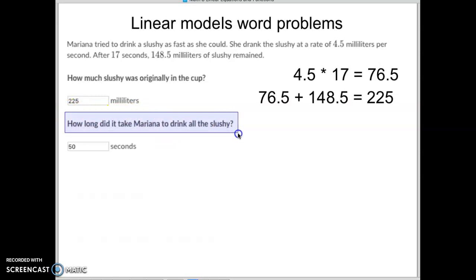How long did it take her to drink her slushie? I guess I already put the answer in there for you, but here's how you figure it out. If we started with 225 milliliters and we know we're drinking this at 4.5 milliliters per second, we simply take the 225, we divide by the 4.5 milliliters per second, we know it will take us 50 seconds to drink it all.